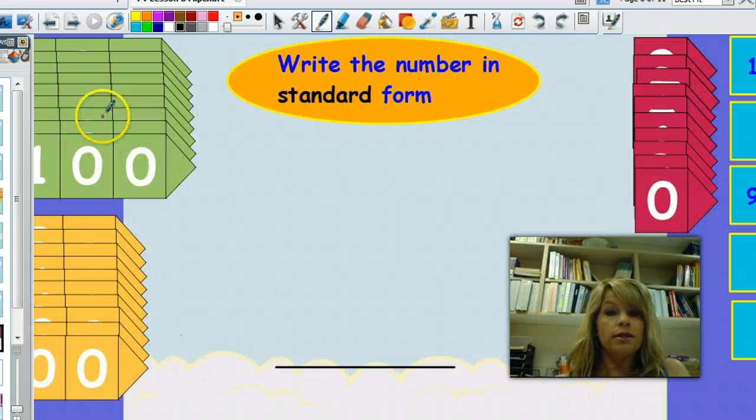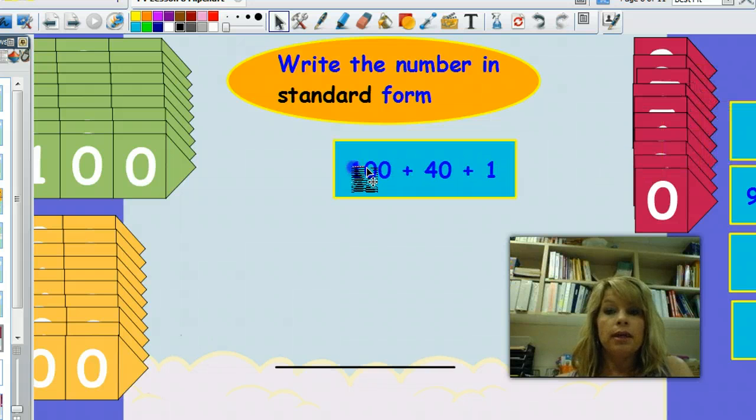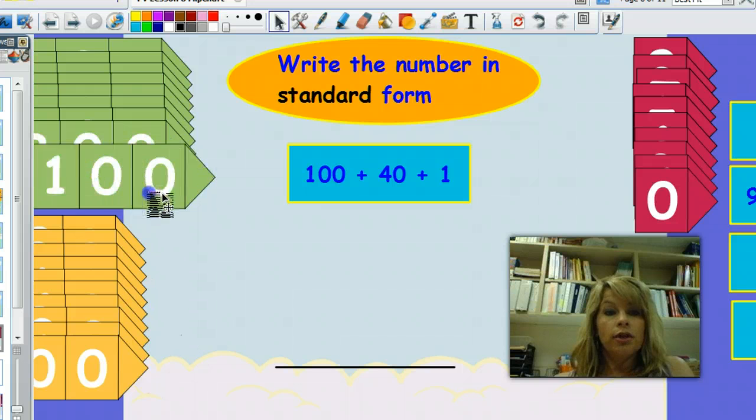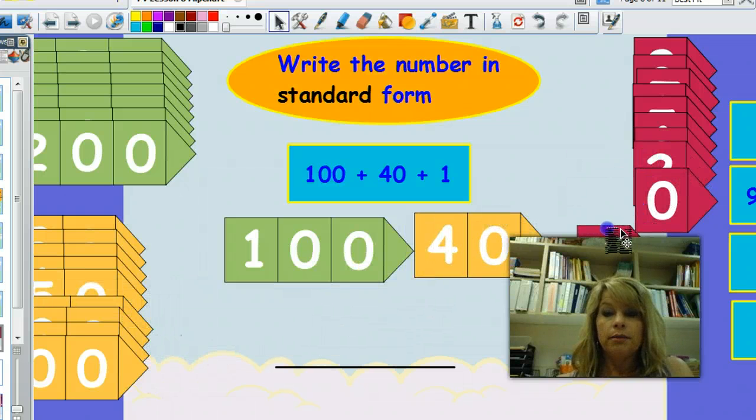Let's practice a few. Get your whiteboard marker and sock ready. And for this lesson, you'll also need to have your arrow cards ready. Take out your arrow cards and make this number. You'll need your hundred. You'll need a forty. And you'll need your one. Put them together to make the number, and then write the standard form.